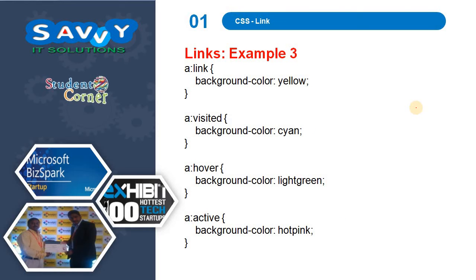The next one is links with background color. We are also applying background color to the link text. When it is a:link we are giving yellow; when it is a:visited we are giving cyan; on hover we give light green. In the practical section we will explain very clearly in detail how the colors are changing.